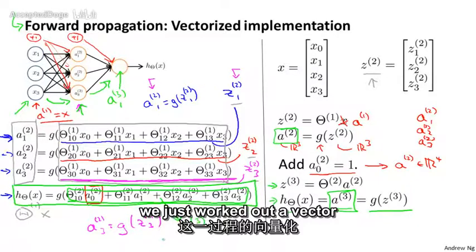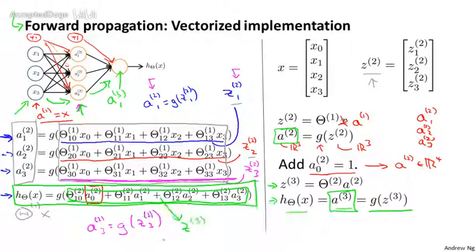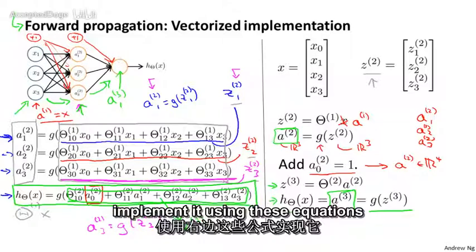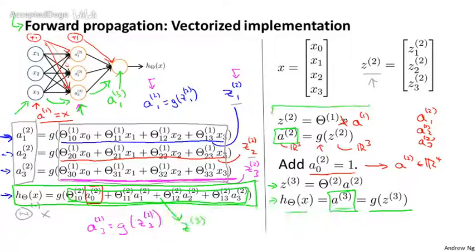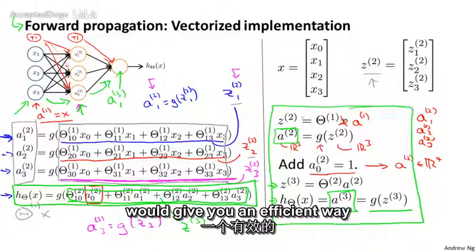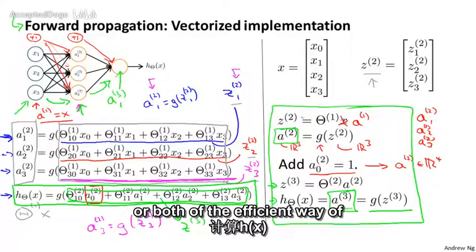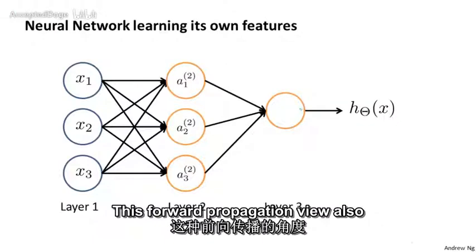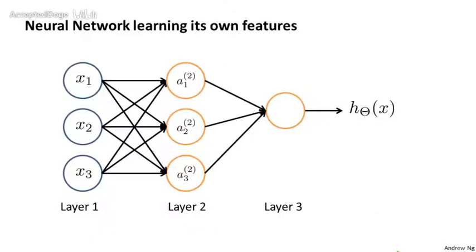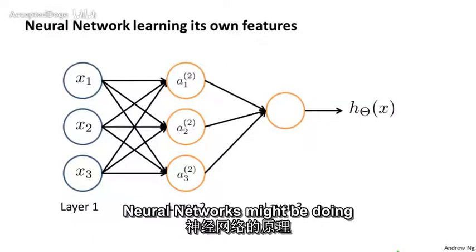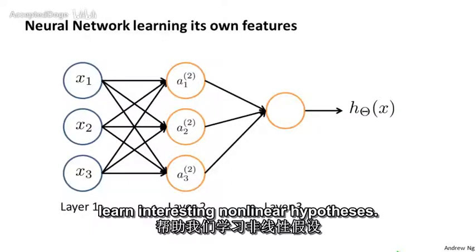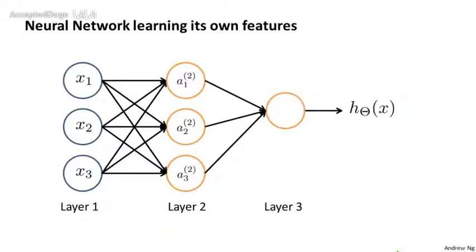What we just did was work out a vectorized implementation of this procedure. If you implement it using these equations on the right, this gives you a relatively efficient way of computing h of x. This forward propagation view also helps us understand what neural networks might be doing and why they might help us to learn interesting nonlinear hypotheses.